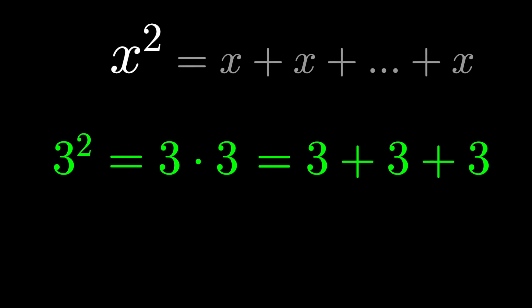Start with x squared. In the same way that 3 squared means 3 times 3, or 3 added up 3 times, let's just say x squared is x added up x times.